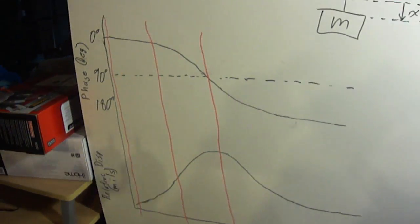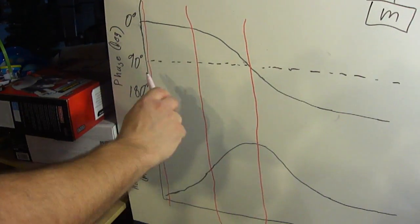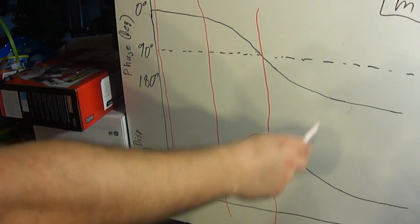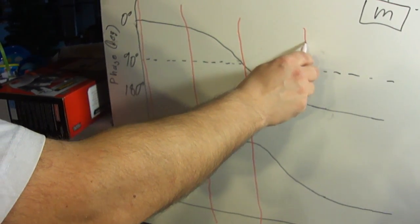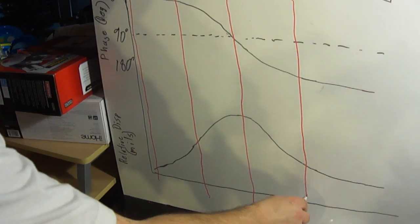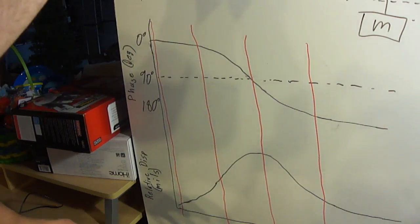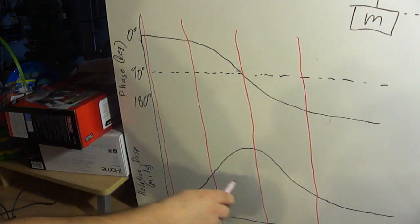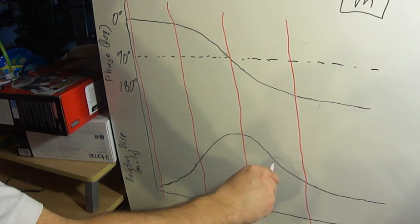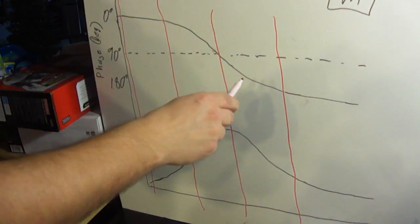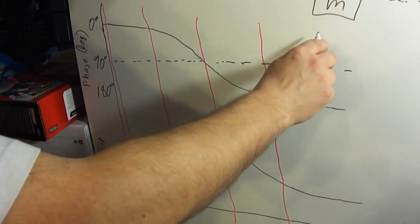Now above its natural frequency, this is when the phase shift is greater than 90 degrees. So at case four, let's say at 135 degrees, the weight will start moving counter to my hand, and also the amplitude of the oscillations will die down, as well as the next case, case 180 degrees phase lag.